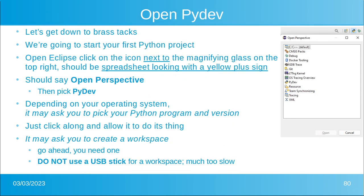The first thing you need to do is open up PyDev. You already have Eclipse open. Go to the top right-hand corner, look for that magnifying glass — right next to it there's a little spreadsheet with a little yellow plus sign. When you click on it, it should say 'Open Perspective.' Select the one that looks like a blue and gold snake wrapped around each other — it's called PyDev. Depending on your operating system it may ask you to pick a Python version. It may also ask you to create a workspace. This is where you're going to keep all your files. Do not use a USB stick for a workspace — it is much too slow.